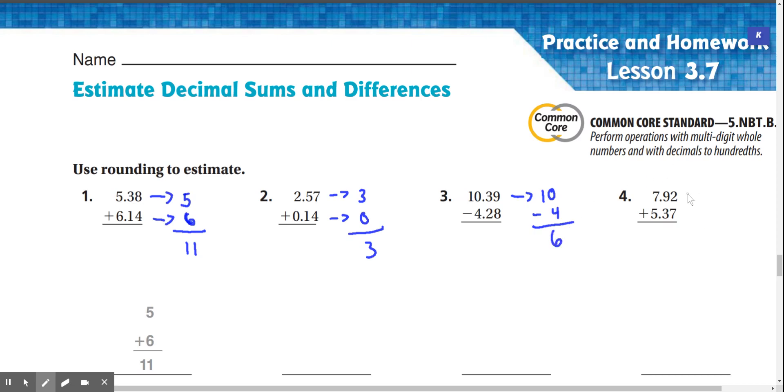Number four, 7.92 rounds to 8, and 5.37 rounds to 5. Now we add 8 plus 5, and that's going to give us 13.